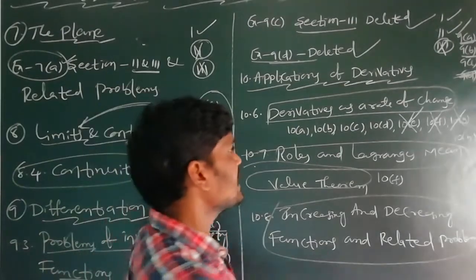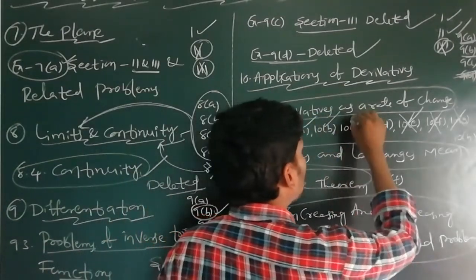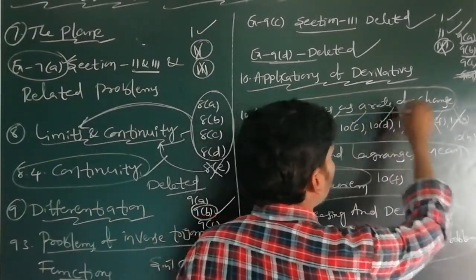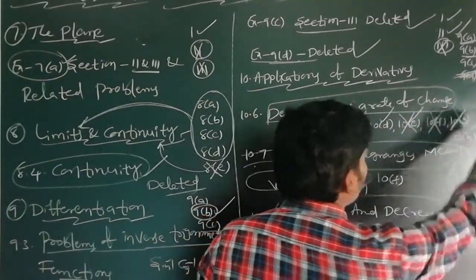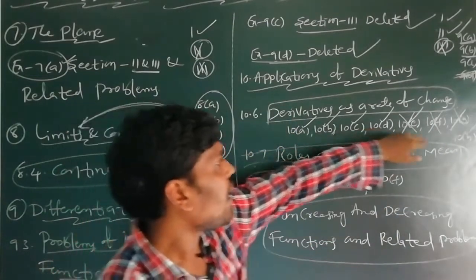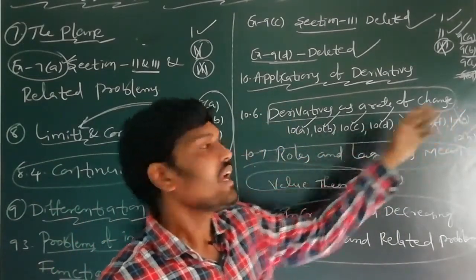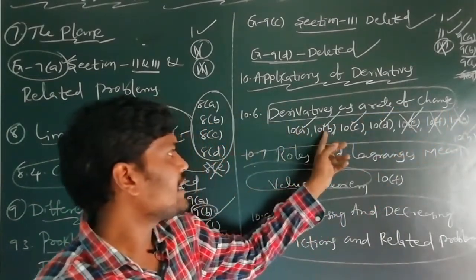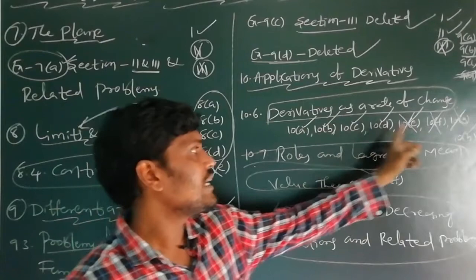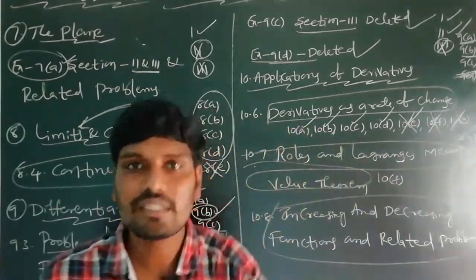The exercises coming to the IP examination from Applications of Derivatives are: 10a, 10b, 10c, 10d, and 10h. These 5 exercises are included in the IP examination syllabus.